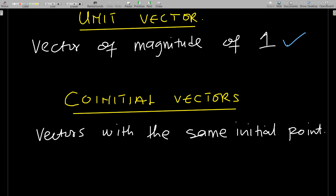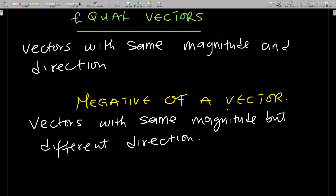The unit vector is a vector that has a magnitude of one. Co-initial vectors are vectors with the same initial points. For example, if I have two vectors A and B both moving from the origin O, then A and B are co-initial vectors.